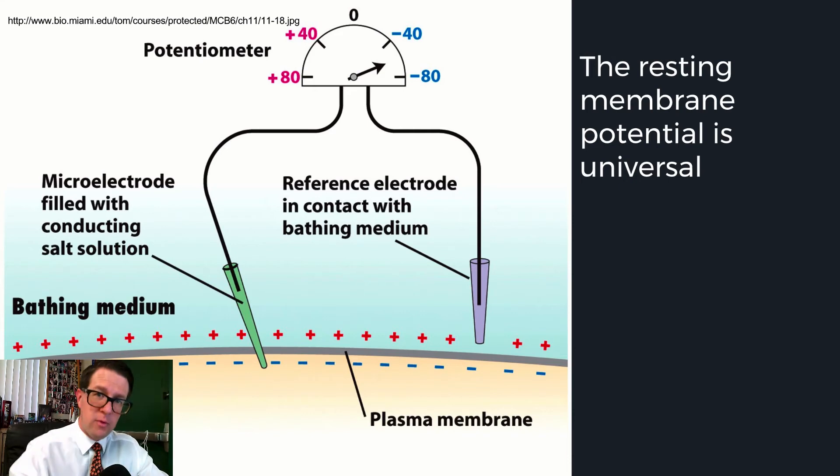At the point where potassium ions are no longer leaking out, we call that the resting membrane potential. The values vary: some are -70, some are -40, some are -90 millivolts, which is about a twentieth of a AA battery. Each cell in your body that does this, and all cells do this, is a potential battery to be used.